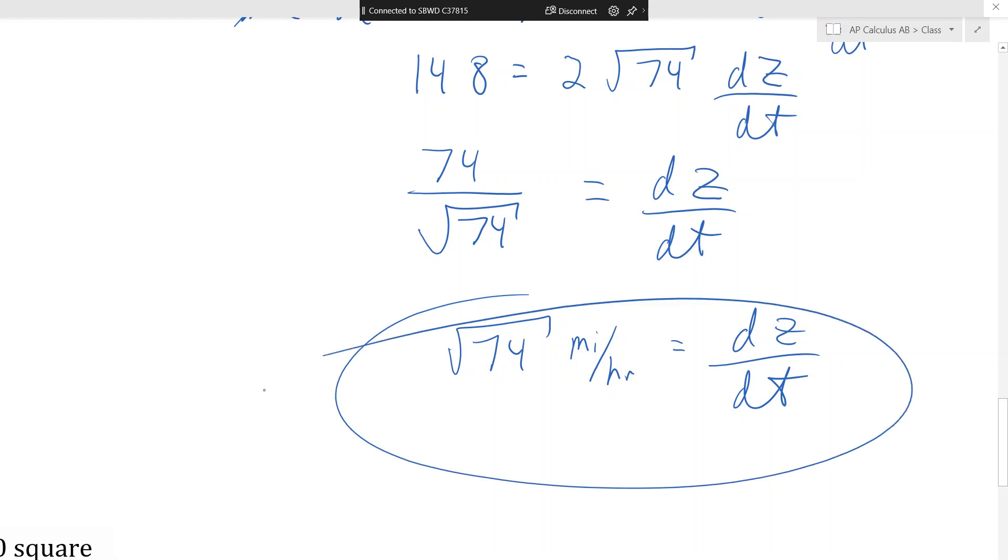296, if you take a four out of there, becomes 74. So root 296 is two root 74. And then you divide. If you divide by that, 148 divided by two is 74. Divided both sides by two again. And anything divided by its square root is just its square root. So it's root 74, and that's in miles per hour. So again, that's an eight-something.